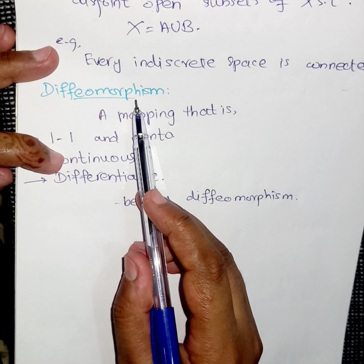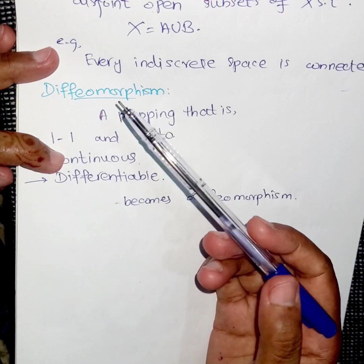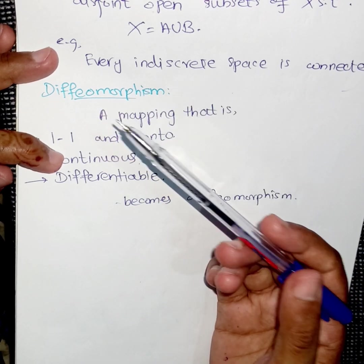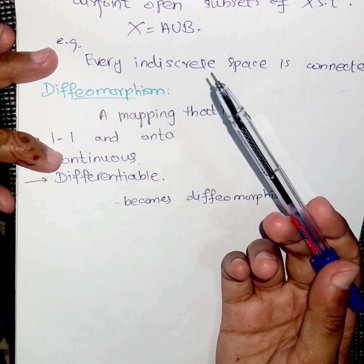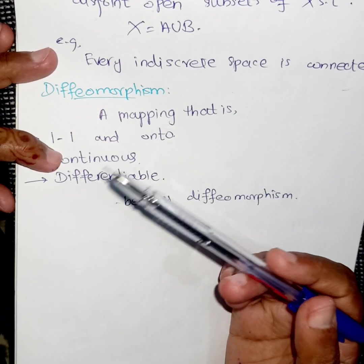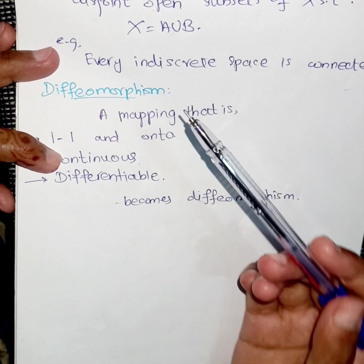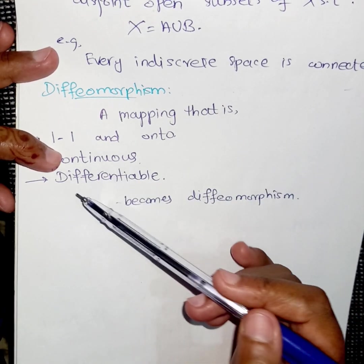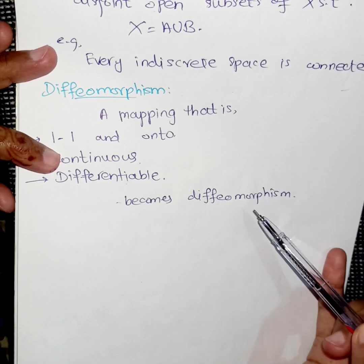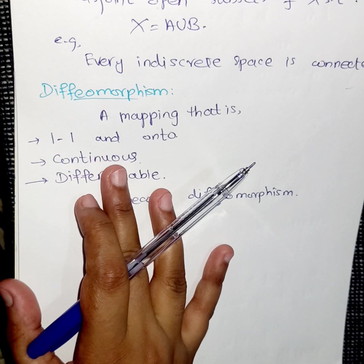We know that in the definition of isomorphism, we have a mapping that is one-to-one and onto. In the definition of a homeomorphism, the mapping is also continuous — one-to-one, onto, and continuous. But if along with all these three conditions the mapping is also differentiable, then we say it is a diffeomorphism.